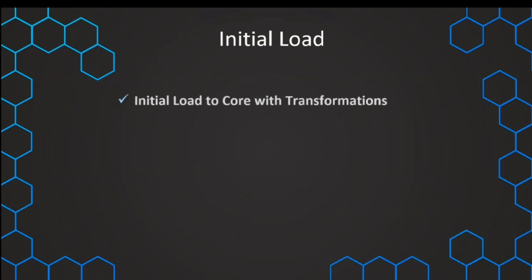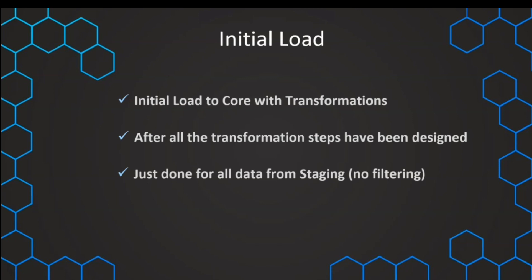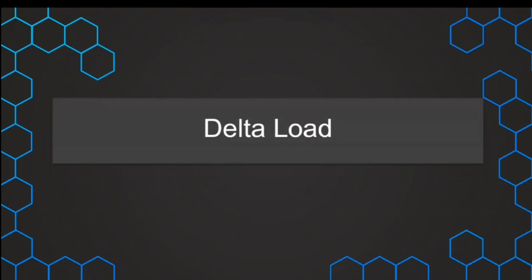We can make smaller extractions to test how much time is needed for the initial load, so we can estimate and communicate the required time window to the responsible teams. Once we have the data in the staging layer, we also perform an initial load to the core layer where all transformations are applied — after we've designed, planned, and tested all transformation steps in our ETL tool. This is the second step of the initial load: copying all data from staging into the core layer. Then there is the delta load for the next run, loading only new data.